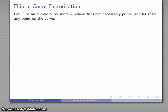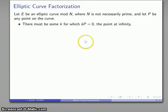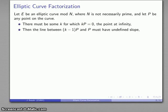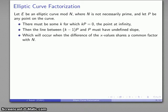So let's consider this basic problem. If I take an elliptic curve E and I'm working mod N, where N is not necessarily a prime number, suppose I have some point P on the curve. Because I'm working mod N, there's only a finite number of points on the curve, so there has to be some k for which kP is zero, our point at infinity. This means the line between (k-1)P and P must have undefined slope, which will occur when the difference of our x-values has a common factor with N.